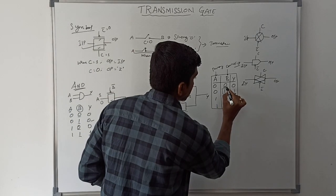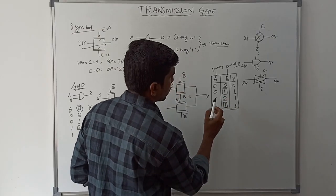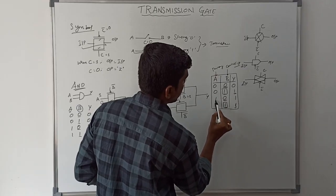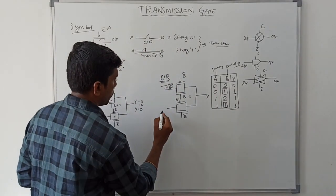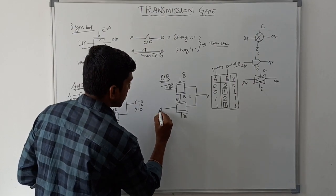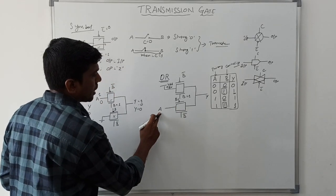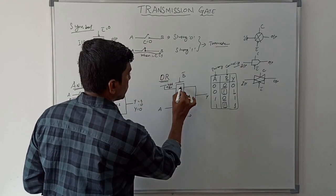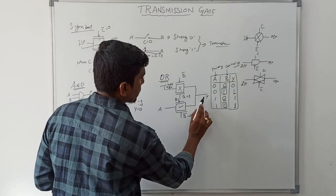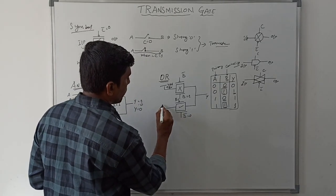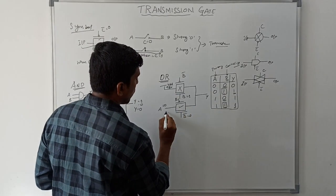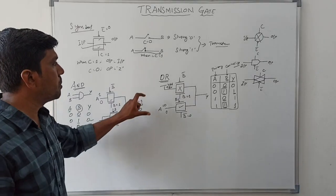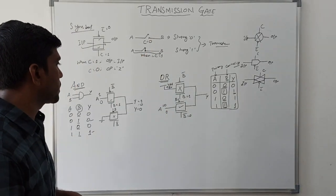For the second case, when B equals 0, A equal to 0 gives Y equal to 0, and A equal to 1 gives Y equal to 1, so A equals Y. The second transmission gate is connected to A directly. Whenever B equals 0, this transistor turns on and the other turns off, so the A value is transferred to output. This is the basic operation of OR gate using transmission gate.